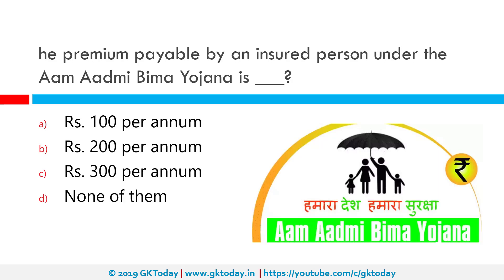The premium payable by an insured person under the Aam Admi Bima Yojana is none of the options given. This is a social security scheme for rural landless households and was launched on 2nd October 2007. There is a premium of 200 rupees, but it is shared equally by the central and state government, so the insured person doesn't really have to pay anything. The member to be covered should be aged between 18 and 59 years and must be the only earning member or one person from a rural household that doesn't own any land.